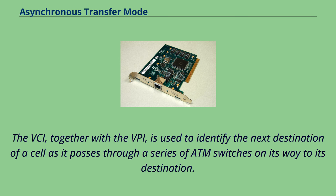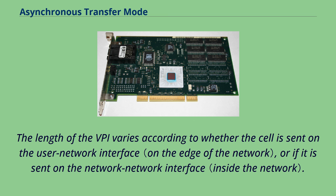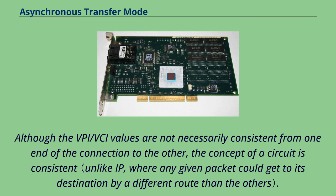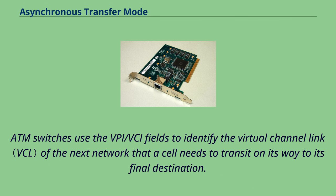The length of the VPI varies according to whether the cell is sent on the user-network interface or the network-network interface. As cells traverse an ATM network, switching takes place by changing the VPI/VCI values. Although the VPI/VCI values are not necessarily consistent from one end of the connection to the other, the concept of a circuit is consistent. ATM switches use the VPI/VCI fields to identify the virtual channel link of the next network a cell needs to transit on its way to its final destination.